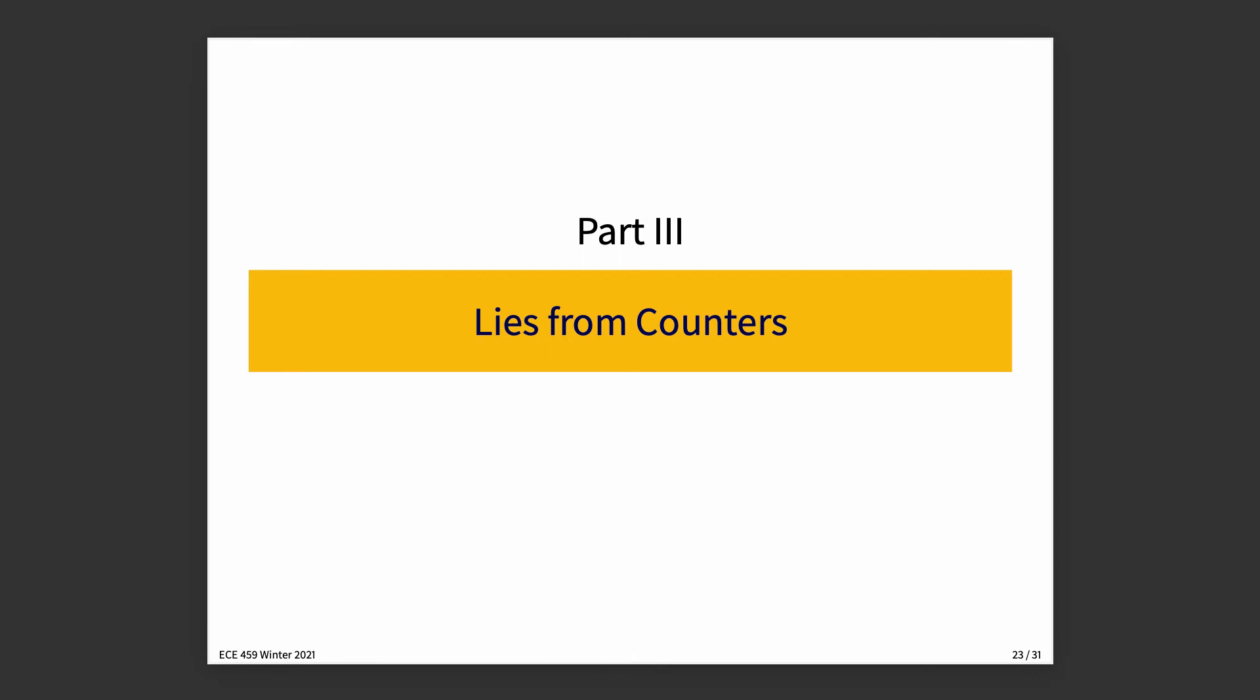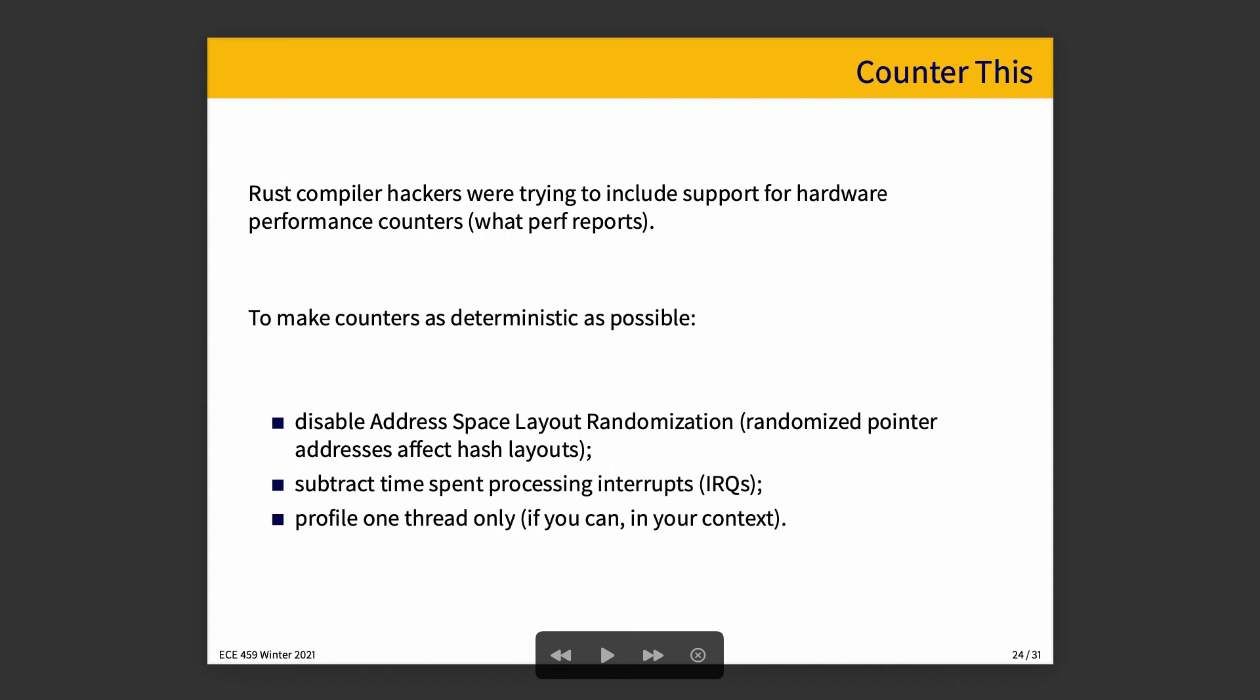The third kind of lie that I want to tell you about is lies from counters. There's a whole long blog post about this, but Rust compiler hackers were trying to include support for hardware performance counters, that is to say, information what is reported by Perf. This was because the option-z self-profile produced data that was too noisy. It wasn't particularly actionable, so the intention was to see if we could come up with something produced by Perf. Counters are a good way of doing some things that we want to do. They're faster than measuring time and a lot more deterministic, something like five orders of magnitude more deterministic than something like sample-based profiling.